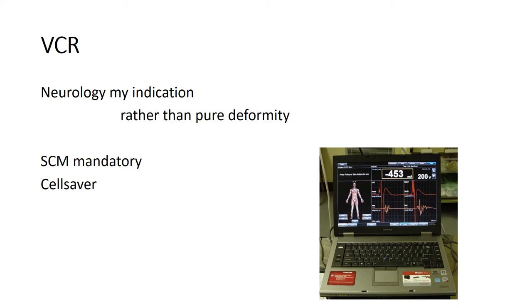Vertebral column resection would be the next step in terms of aggressive osteotomy. In my practice, neurological deficit is an indication rather than poor deformity, as I struggle to justify the high risks of neurological deterioration for pure deformity correction. Spinal cord monitoring is mandatory, and blood losses dictate the use of a cell saver.